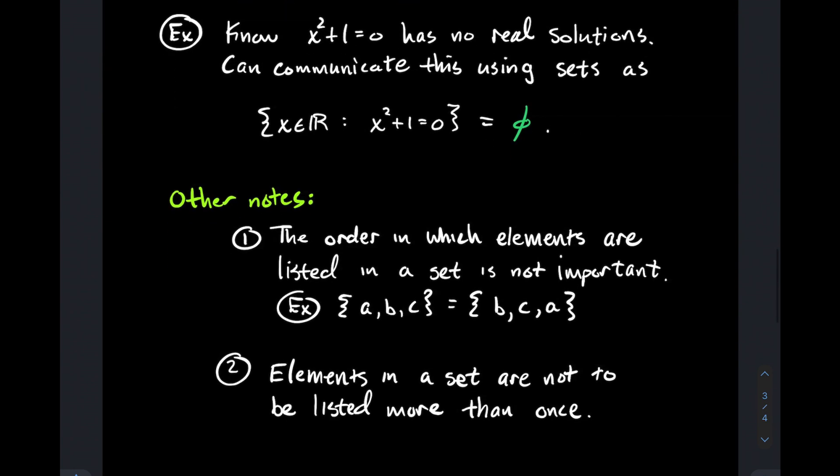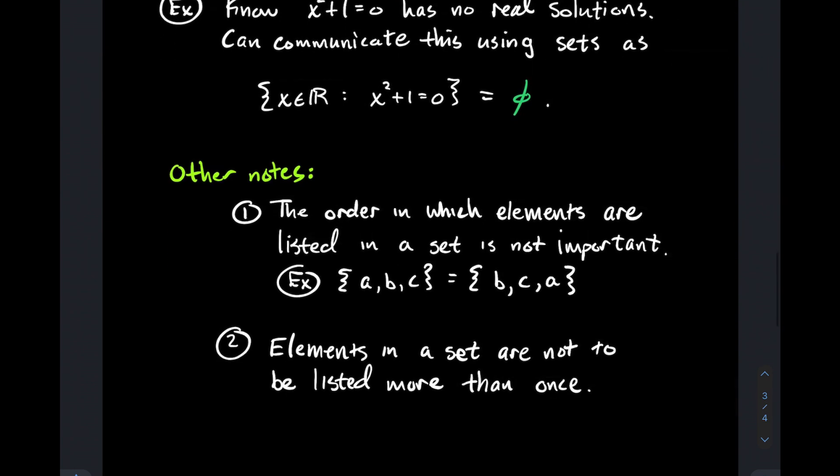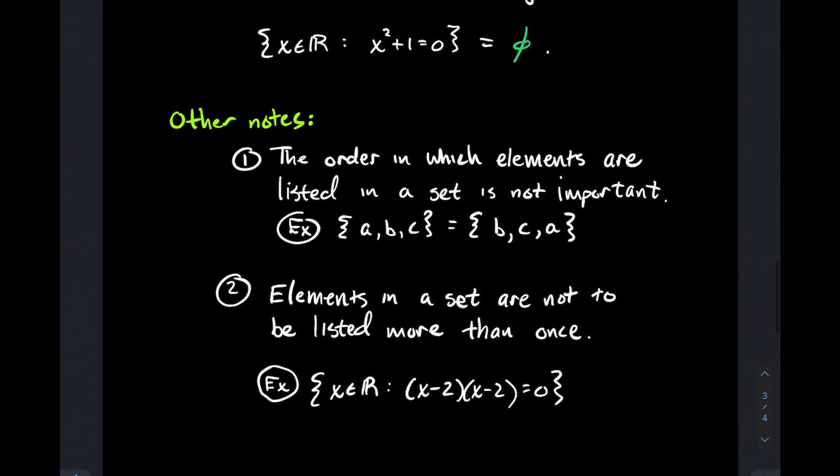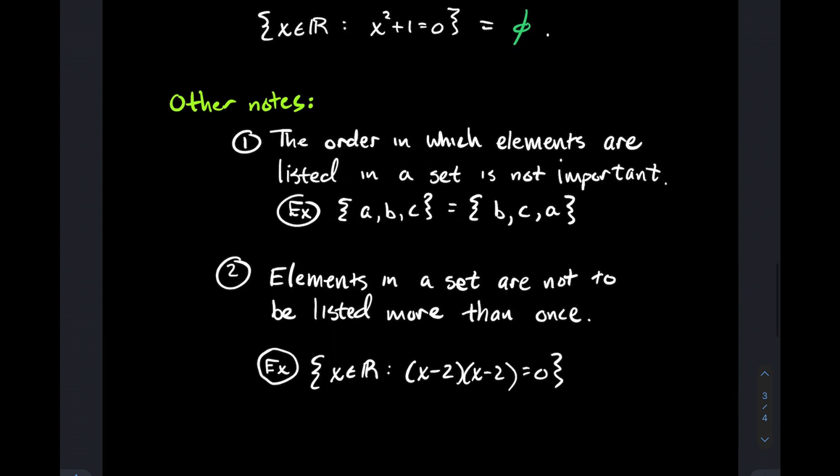Number two: elements in a set are not to be listed more than once. To give you an example, what I've written is the set of all real numbers such that (x - 2)(x - 2) = 0. If you think about what x makes that true, it's just 2. What's very tempting for students is 'oh, it happens twice, I'll write 2 twice.' What I'm saying is when you write it as a set, you do not need to list it twice and you should not list it twice. Sets do not like repetition of elements.